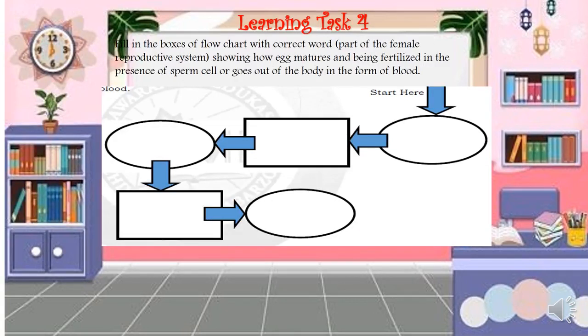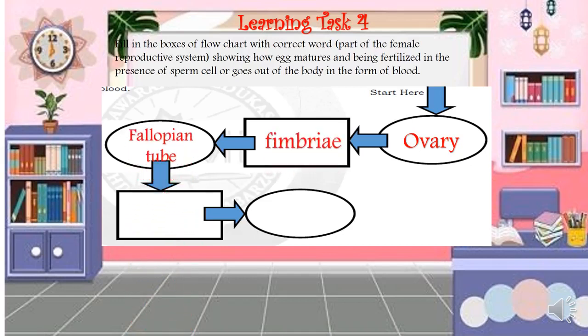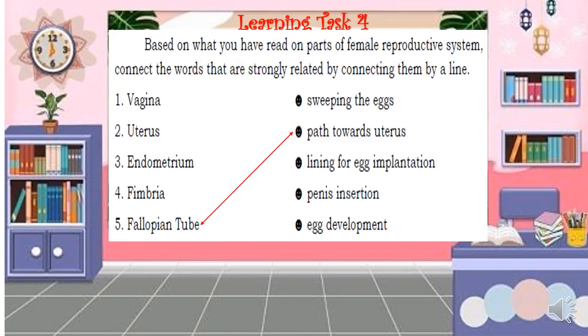Now for Learning Task 4, fill in the boxes of the flowchart with correct parts of the female reproductive system showing how the egg matures and is either fertilized or exits the body as blood. The flowchart starts with the ovary, followed by fimbrae, then the fallopian tube, then the uterus, and finally down to the vagina.